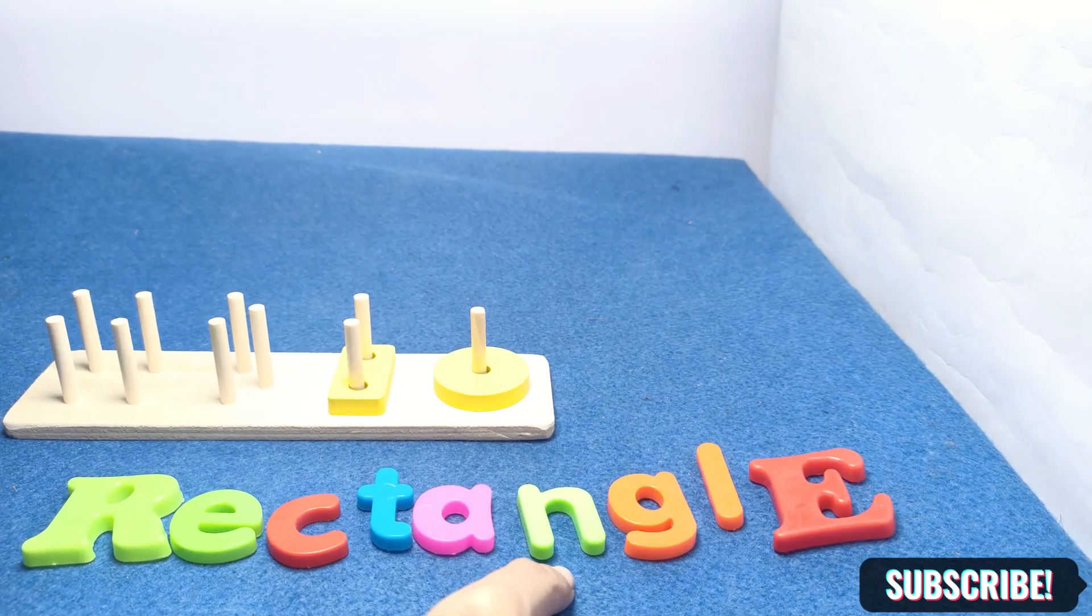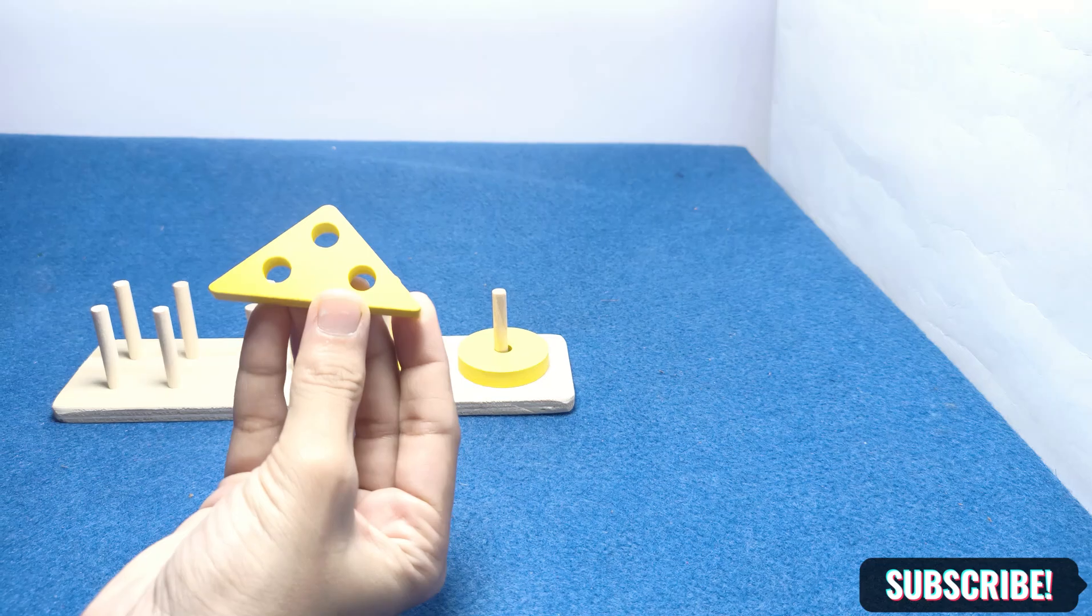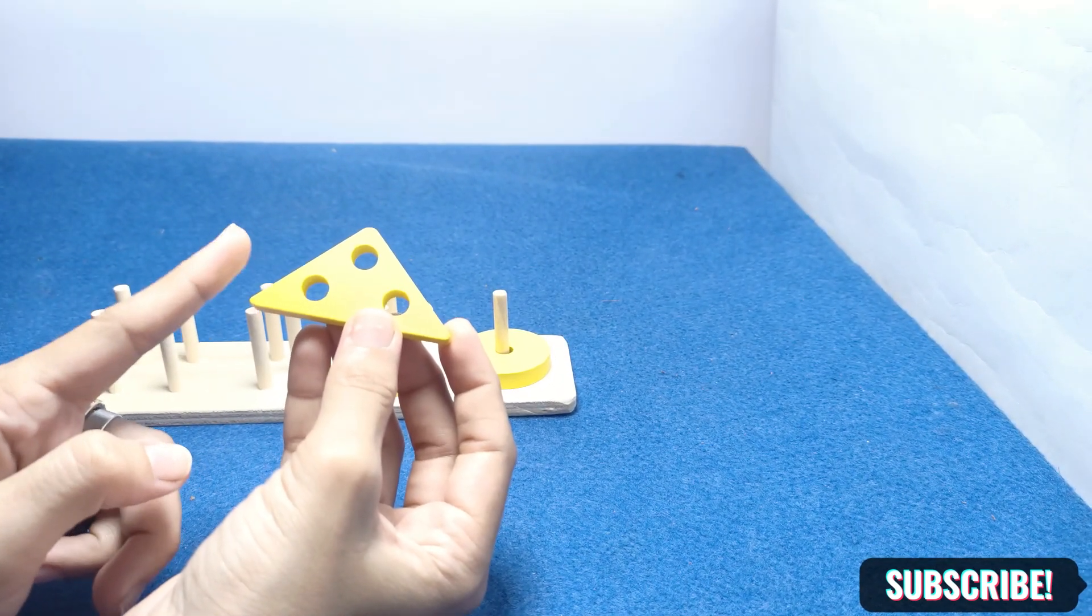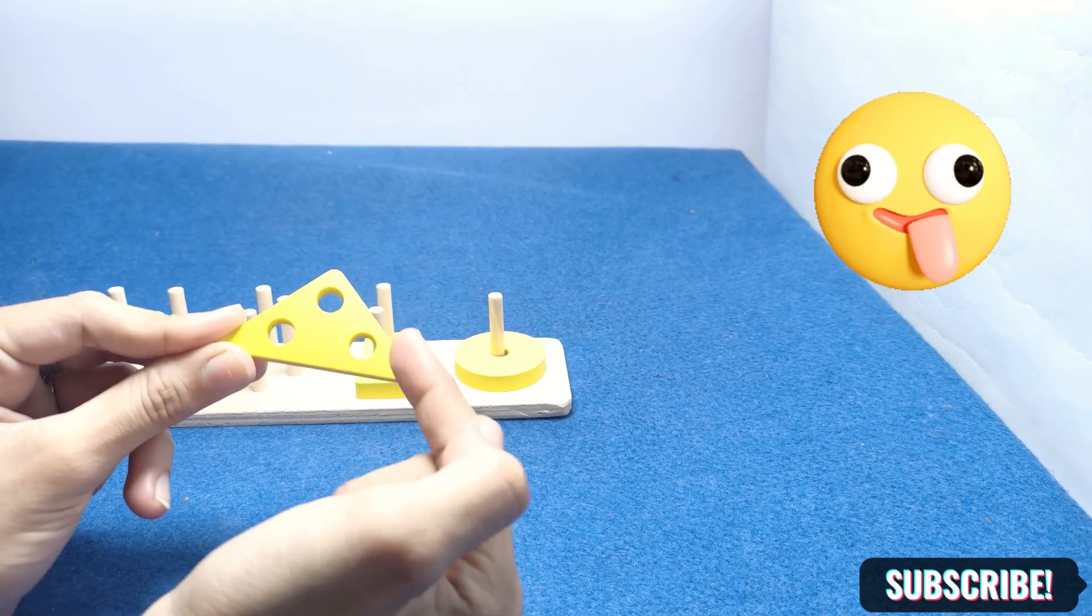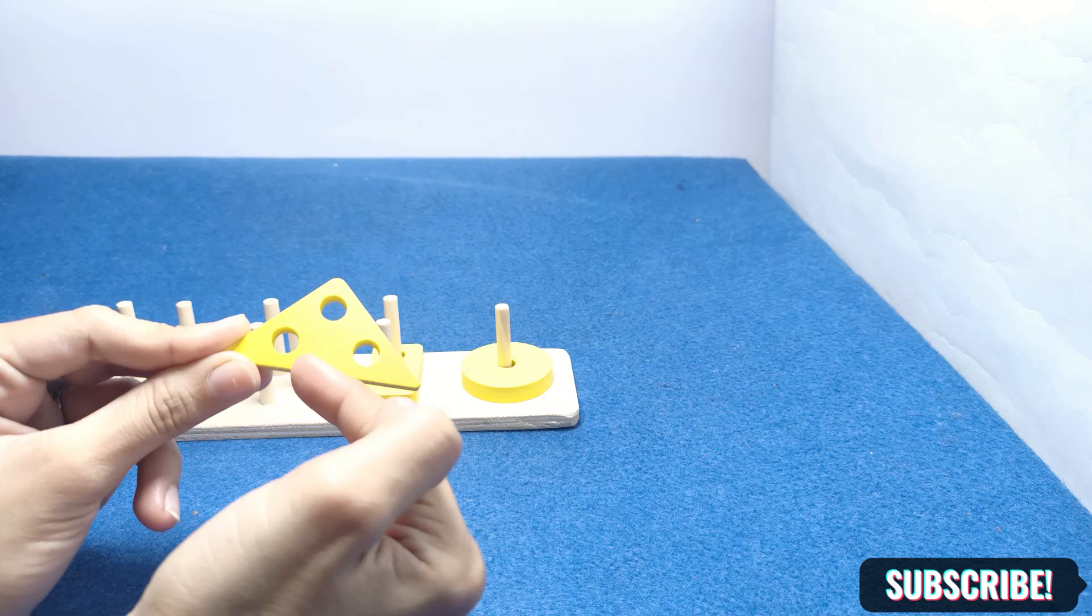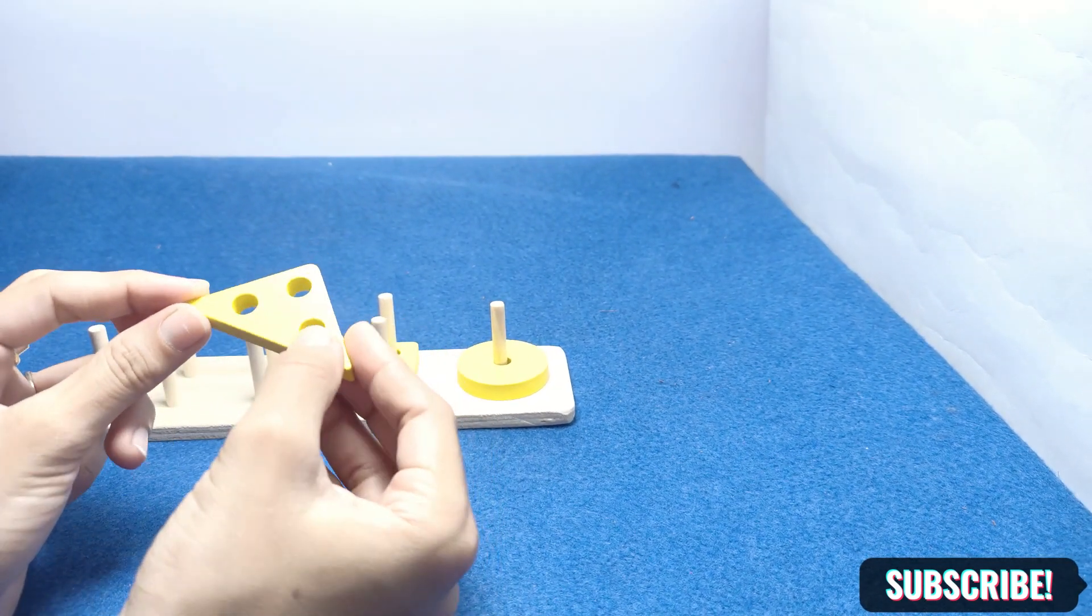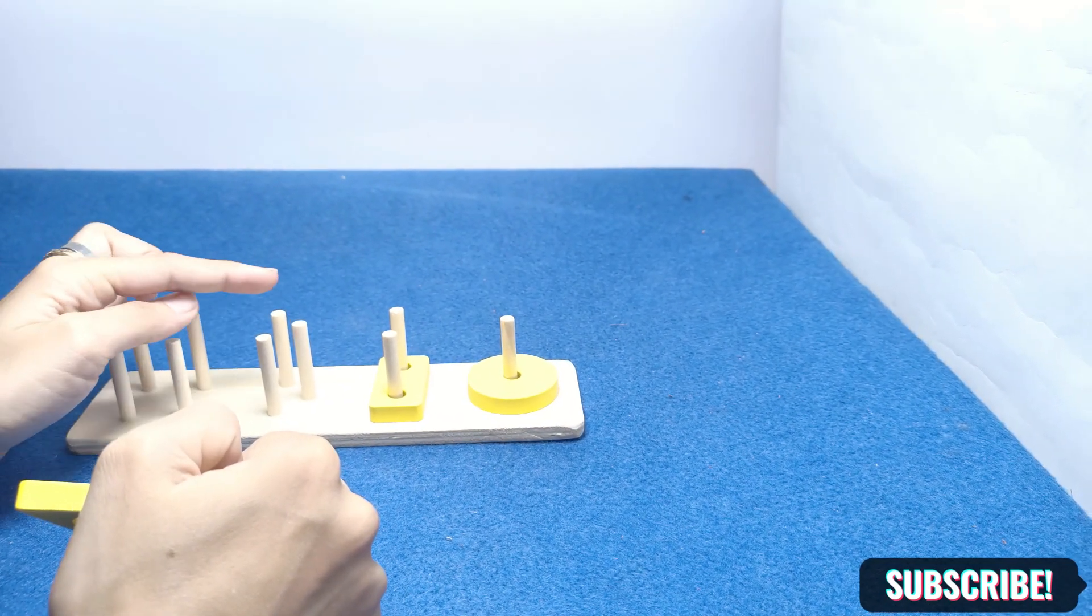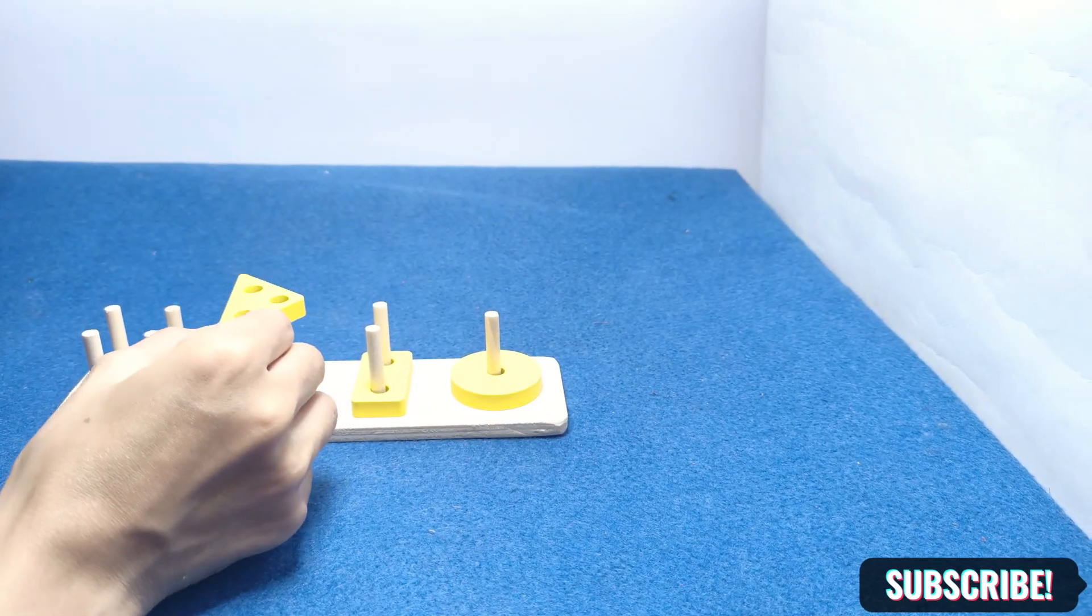Now move to the next shape. What's this? It's a triangle. A triangle has three sides and three holes in this shape. Let's count with me: one, two, three. Three triangle, three holes. One, two, three. There are three holes, so the yellow triangle, put it in.